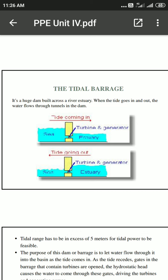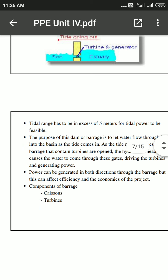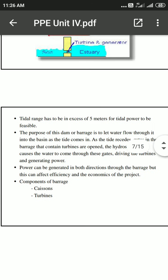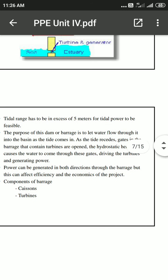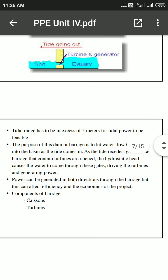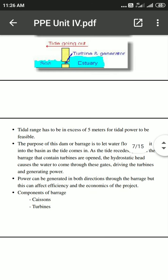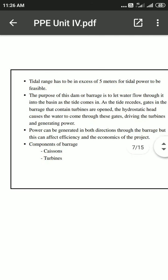The tidal range needs to be in excess of five meters for tidal power to be feasible. The purpose of this dam is to let water flow through the basin, which forms between the barriers containing turbines and generators. Gates in the barriers control the turbines, and the hydrostatic head causes water to come through these gates, driving the turbine and generating power.